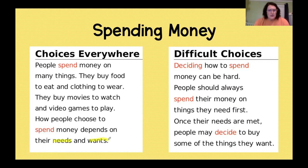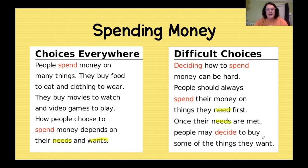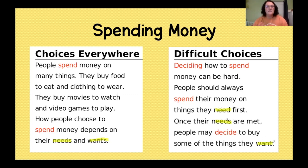Sometimes there are difficult choices. Deciding how to spend money can be really hard. People should always spend their money on things that they need first. Once their needs are met, people may decide to buy some of the items that they want. Our needs are something that we must have — food, water, and shelter. Our wants are things that we would like to have, but we don't have to have them to survive.